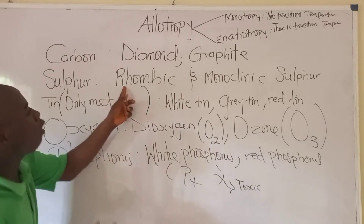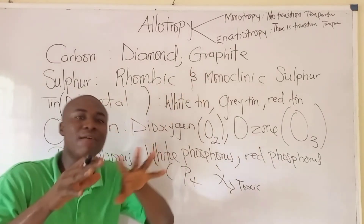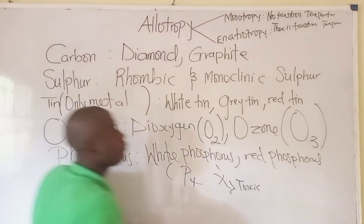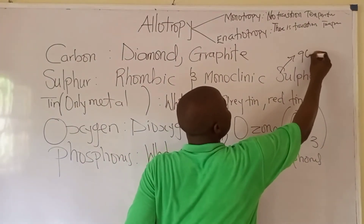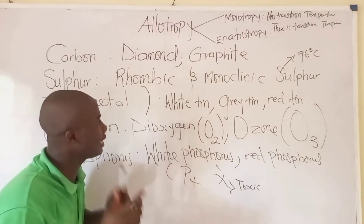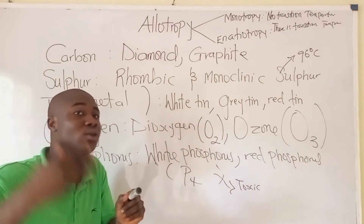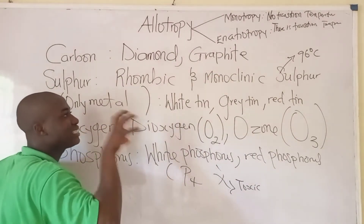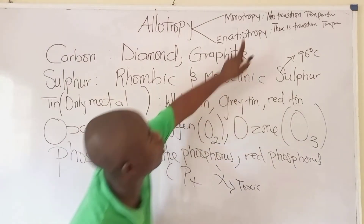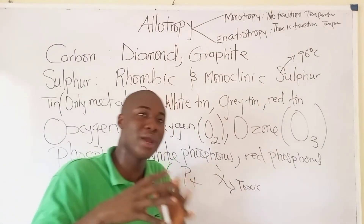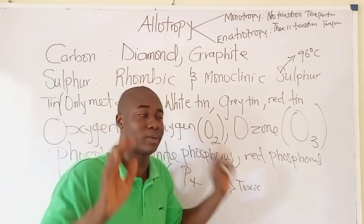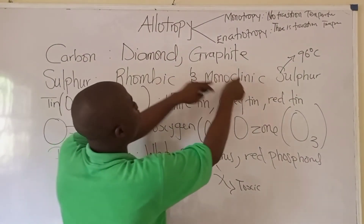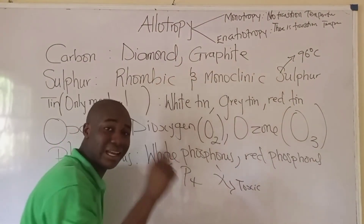For example, with rhombic sulfur and monoclinic sulfur, there is a temperature whereby monoclinic sulfur can change to rhombic sulfur, and that temperature is 96 degrees Celsius. That temperature at which this change happens is called the transition temperature, and it is seen when we are talking about enantiotropy. The transition temperature for monoclinic sulfur changing to rhombic sulfur is 96 degrees Celsius.